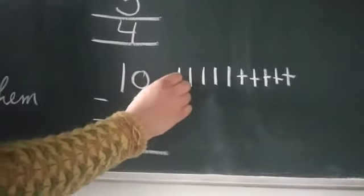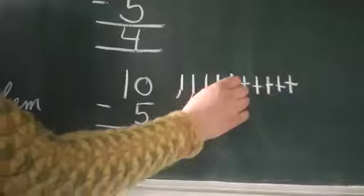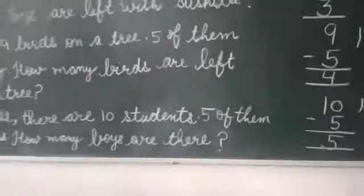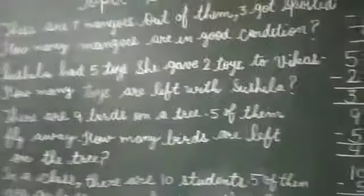Now count these lines: one, two, three, four, five. To yaha pe answer kya aaya hai? Five. Five girls are in the class. Thank you students.